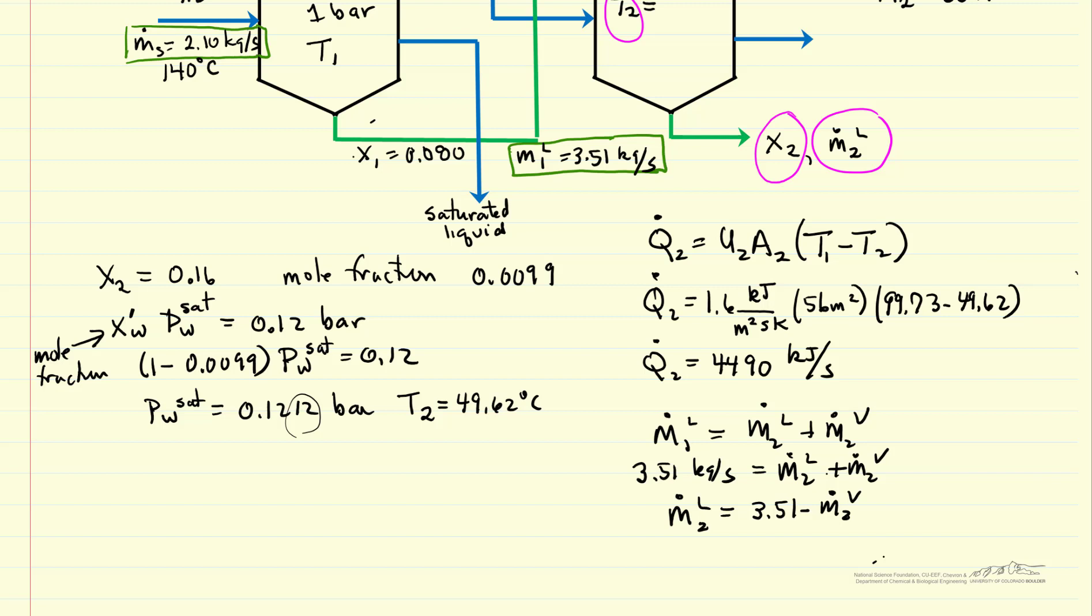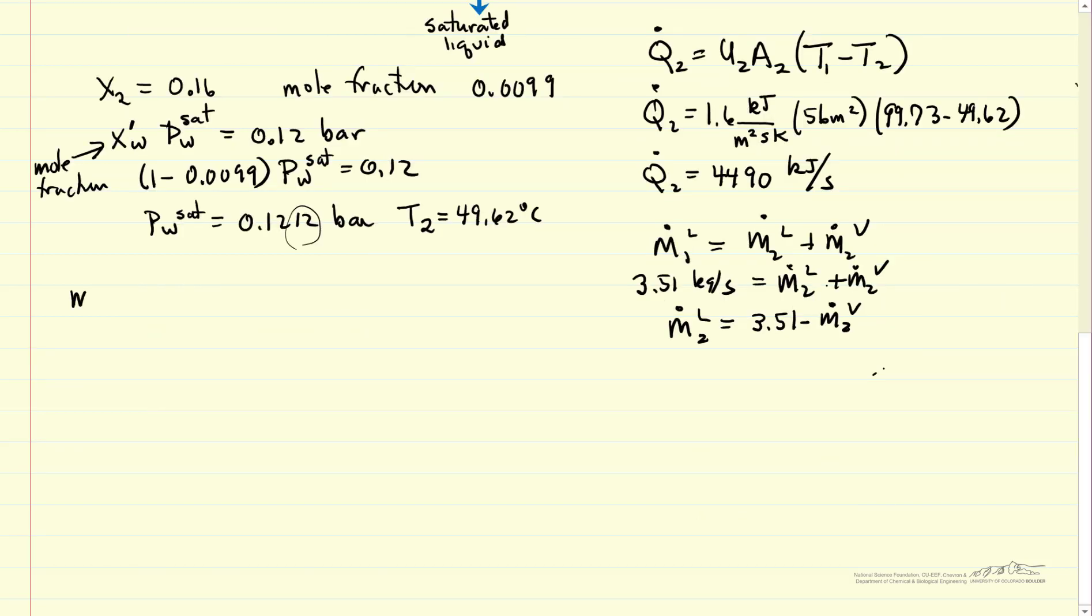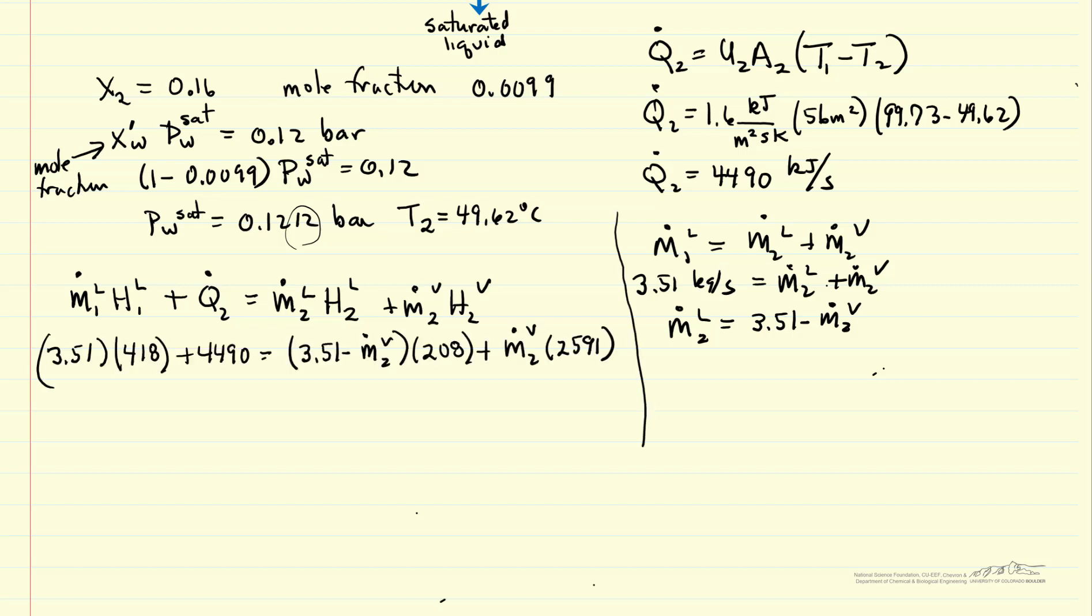So let's look at the energy balance next. We have energy flowing in, so we have the mass flow rate of the liquid and it has an enthalpy based on its temperature. The other energy that we're adding, on the left side of energy being added, that's the heat transfer value we just calculated. And then what's leaving is the liquid mass flow rate at the lower temperature with enthalpy of liquid, and the mass flow rate of vapor leaving with the enthalpy of the vapor, where we're going to look up these values in the steam tables. We know the temperature, we know they're at saturation conditions.